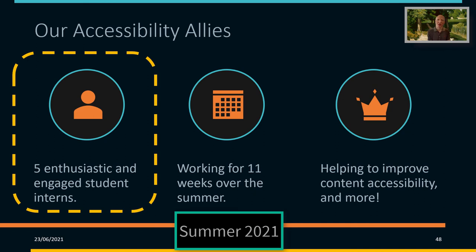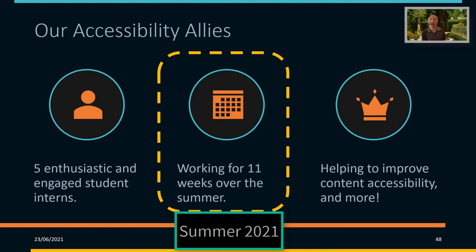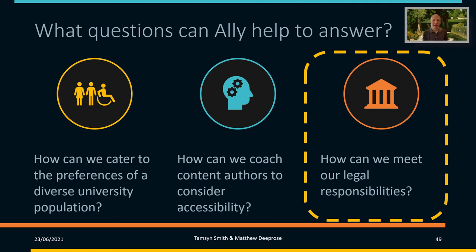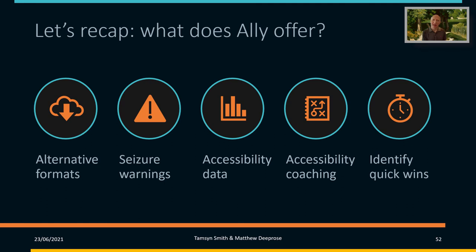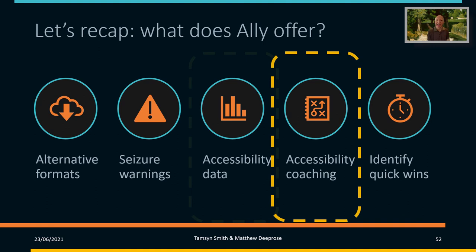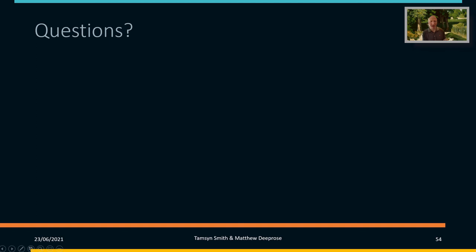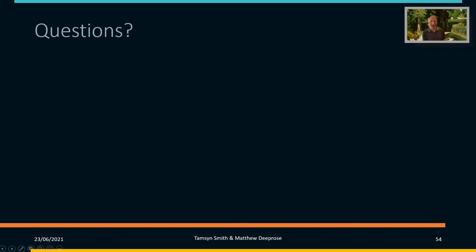We will have five accessibility allies joining us this summer — enthusiastic and engaged interns working for 11 weeks, helping to improve content accessibility and more. The third question Ally can answer is how it can help us meet our legal responsibilities. So to recap: what does Ally offer? We have those alternative formats, seizure warnings, data, coaching, and finding quick wins. It's going to be a great way of helping us on this journey — and while we might never reach 100% accessibility institution-wide, it will certainly take us a big way on that journey. Thank you for your time and thank you for listening.